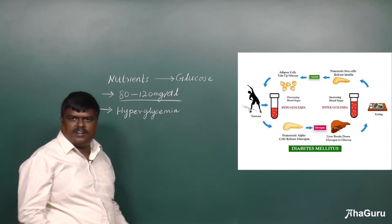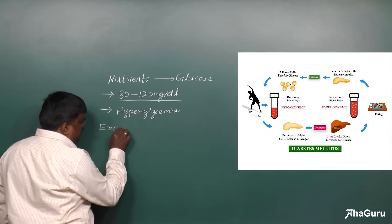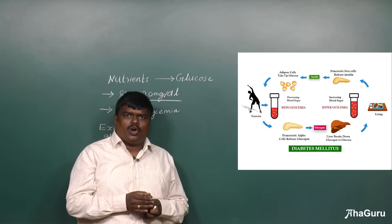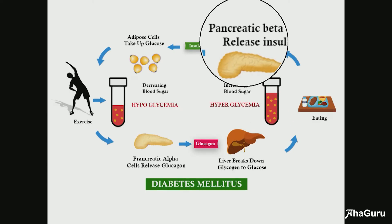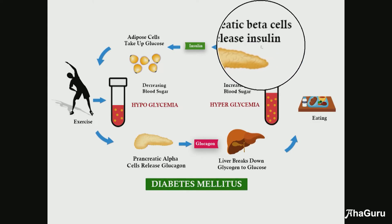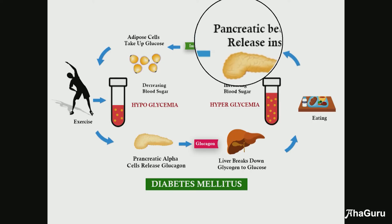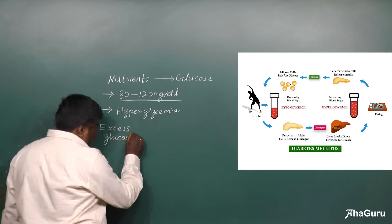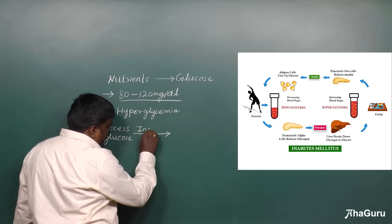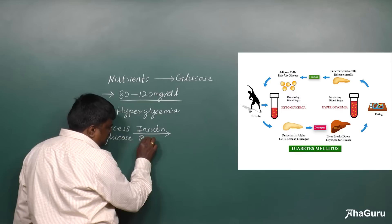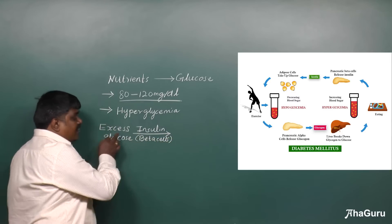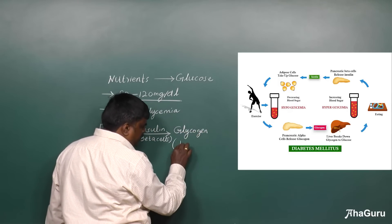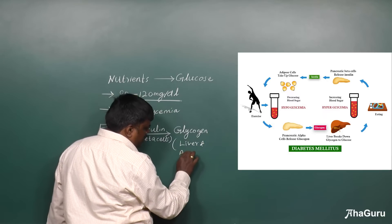High level of blood glucose is there — we call that excess glucose. Whenever there is excess glucose in our body, there is an important endocrine gland called the pancreas. The pancreas releases a hormone called insulin. Whenever there is excess glucose, the insulin hormone, which is produced from the beta cells of the pancreas, converts the excess glucose into glycogen and stores it in the liver as well as in adipose tissues.